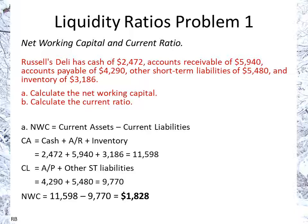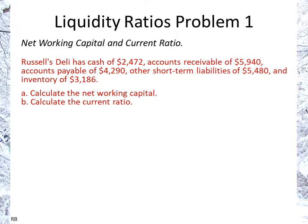The difference between the two is net working capital, which gives us a result of 1,828. Note that because net working capital is current assets minus current liabilities, it could be a positive number, zero, or a negative number — just keep that in mind.